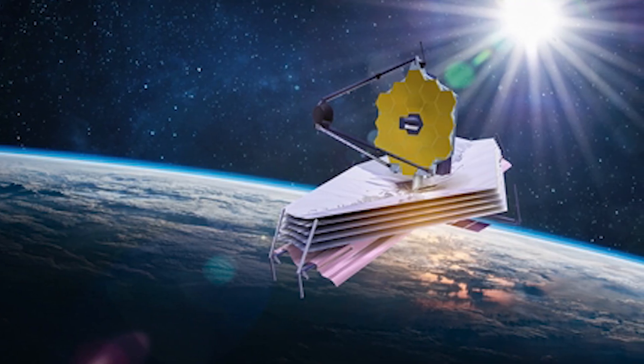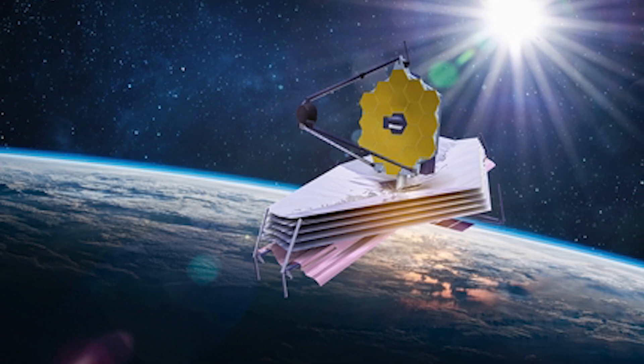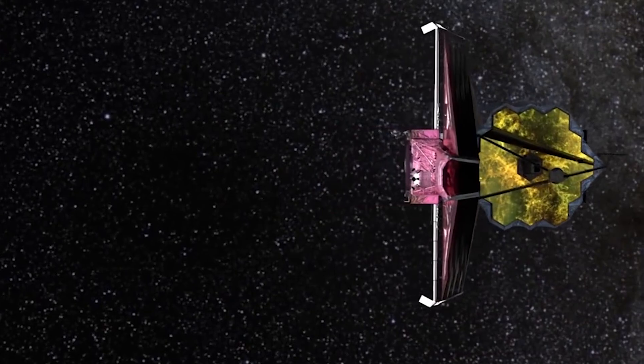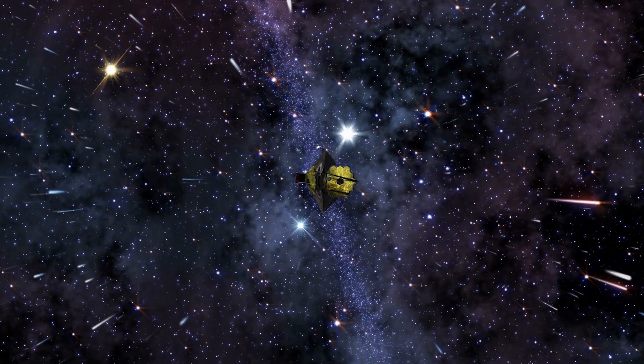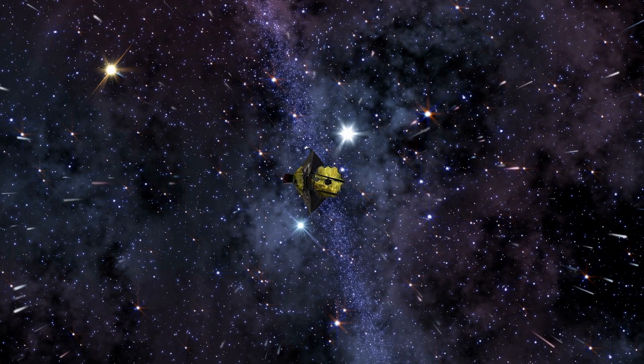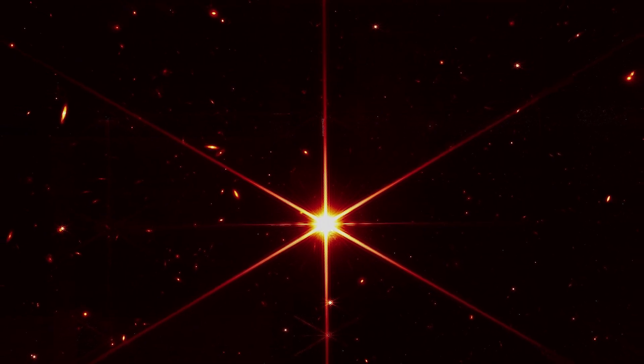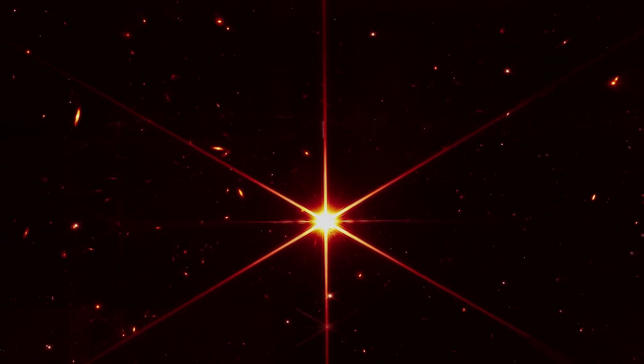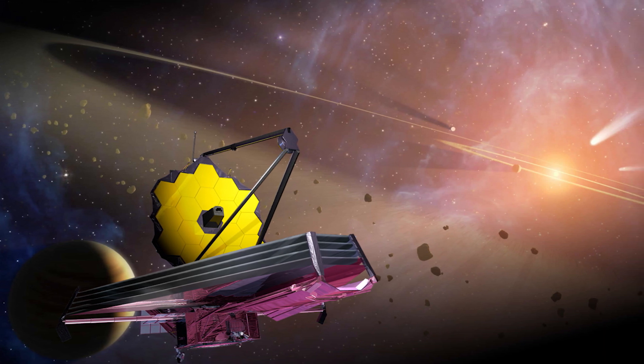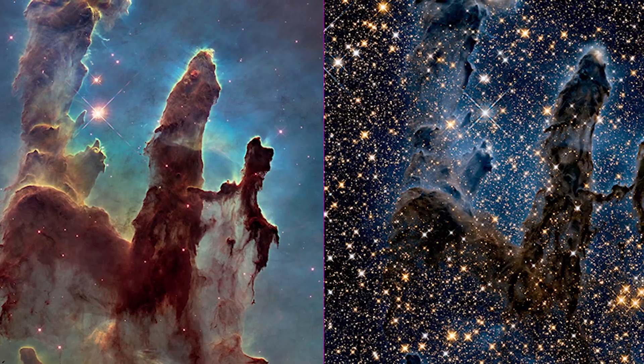JWST has already deployed its solar array to collect energy from the sun, and it will subsequently deploy its high-gain antenna to connect with the Earth. The telescope will then gradually deploy multiple beams and structures, changing its form to study infrared light from the distant universe. By the summer of 2022, the first photographs of Webb will be available. Webb will be focused on spectroscopy because it is an infrared telescope. Hubble supplied visible light photos.